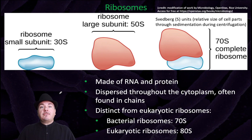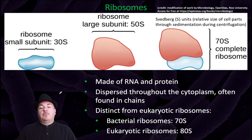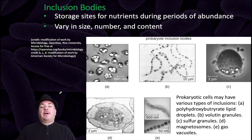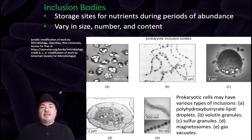One way of measuring the size of a cell component is called a Svedborg unit. It's a relative size of the cell parts through sedimentation during centrifugation. Through this process, we can see that the bacterial ribosomes are 70 Svedborgs, whereas eukaryotic ribosomes are 80. Bacteria can also have inclusion bodies, which can be storage sites for nutrients during periods of abundance, and they can vary in their size, number, and content.